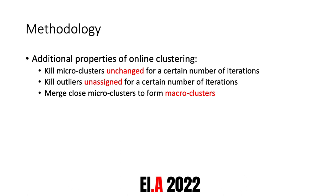There are a few additional properties of the online clustering algorithm. First, we can remove microclusters that remain unchanged for a certain number of iterations to avoid false positives. Second, we can remove outliers that are unassigned for a certain number of iterations to avoid overpopulation of the clustering plan. Finally, we can merge two close microclusters to form a larger one, allowing the algorithm to form shapes other than globular shapes during the clustering process.